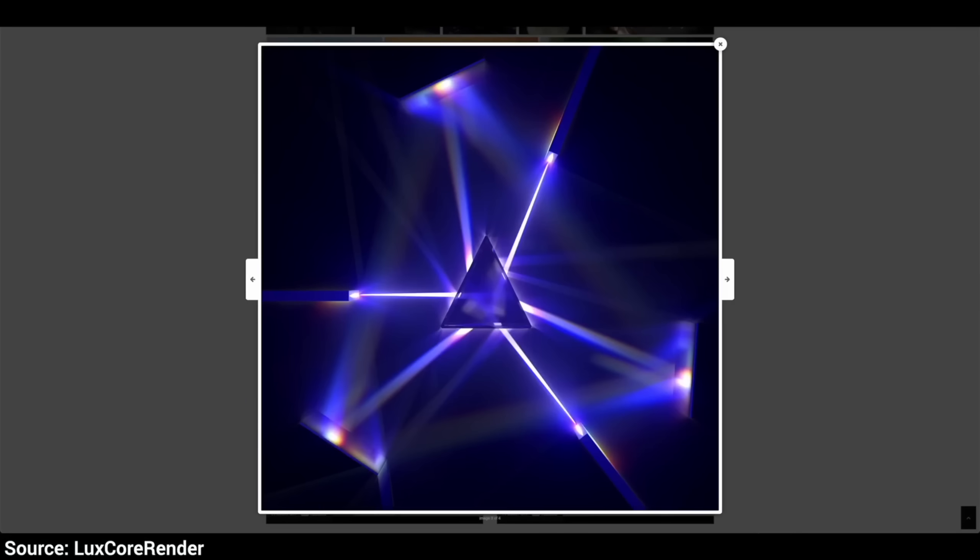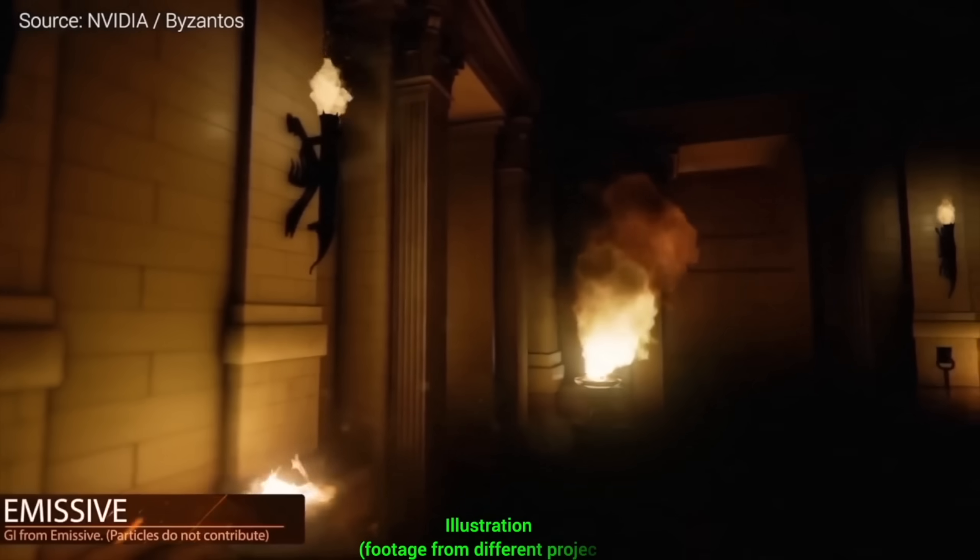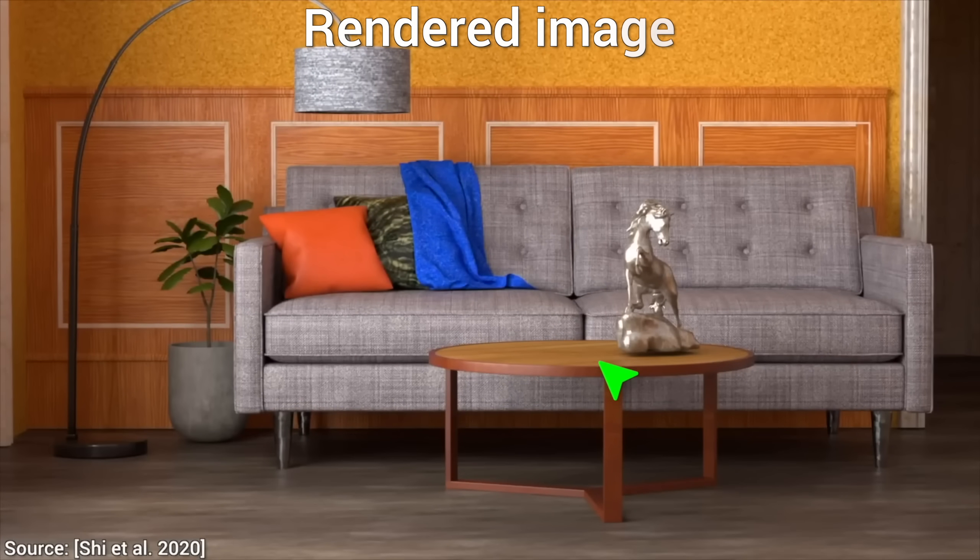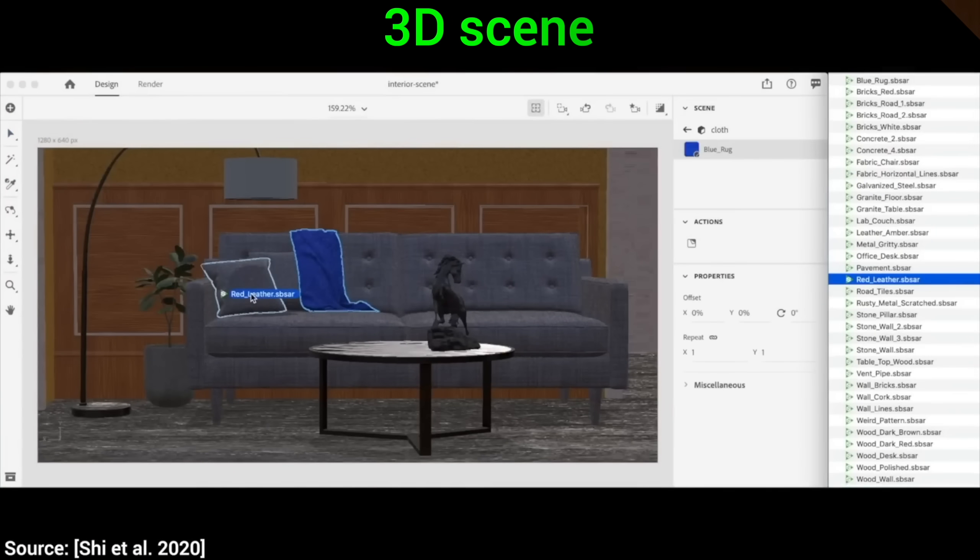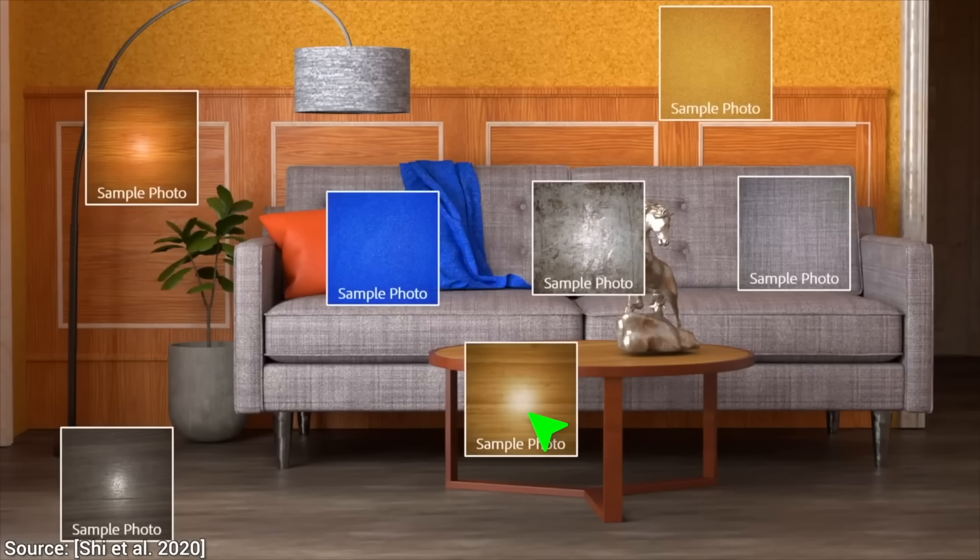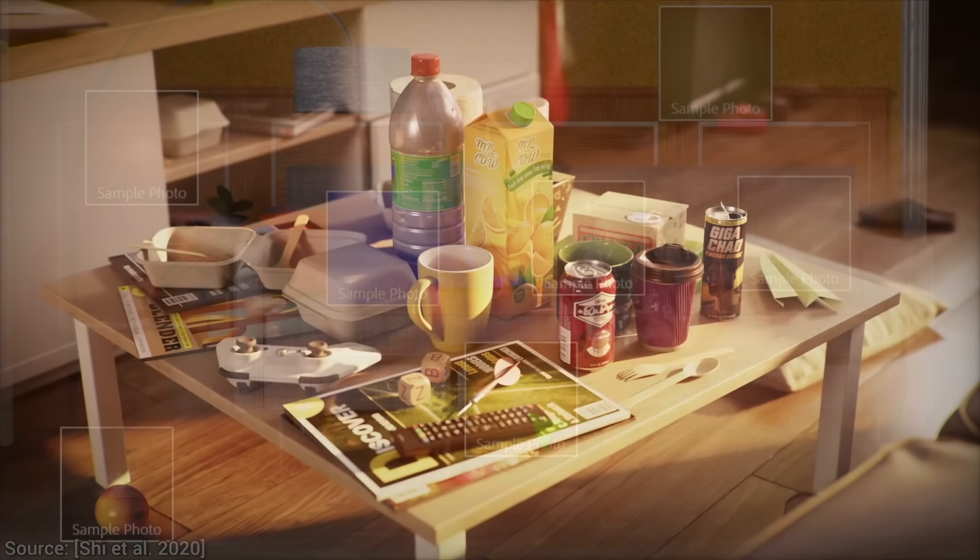But now, imagine the opposite. What is this crazy talk? Well, hear me out. Imagine that you have images and you want to get what the scene was behind the image. Get a digital 3D model of the scene. An image goes in, and a scene comes out.